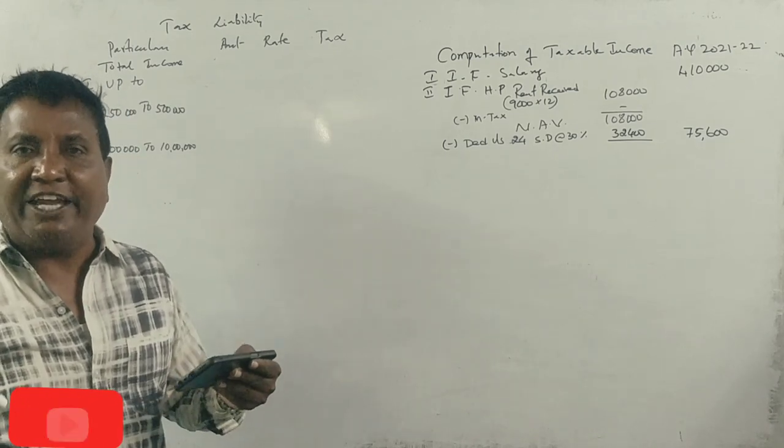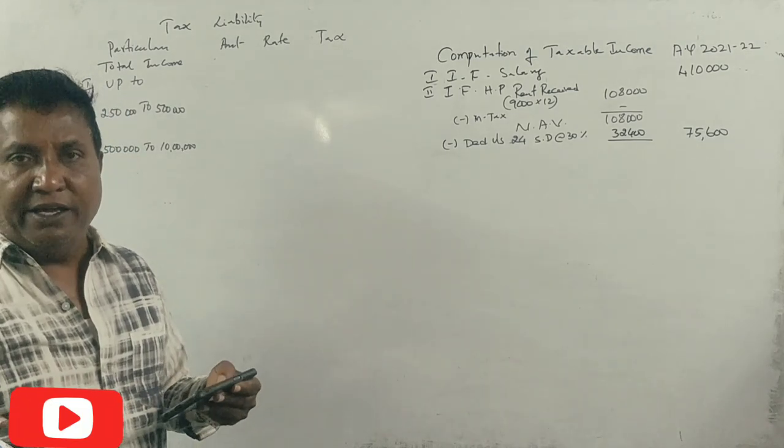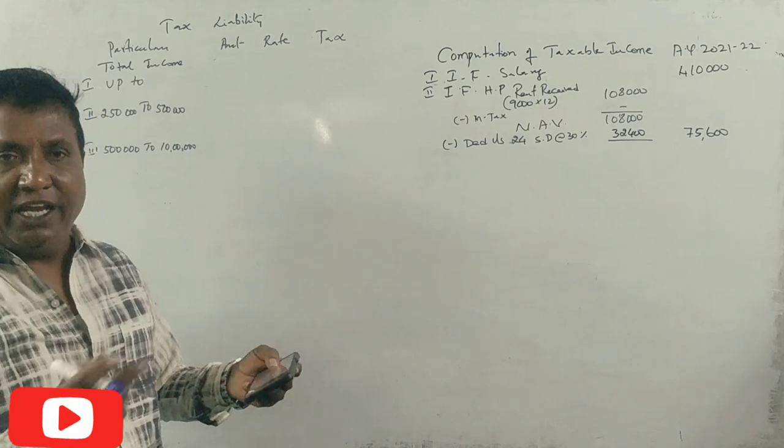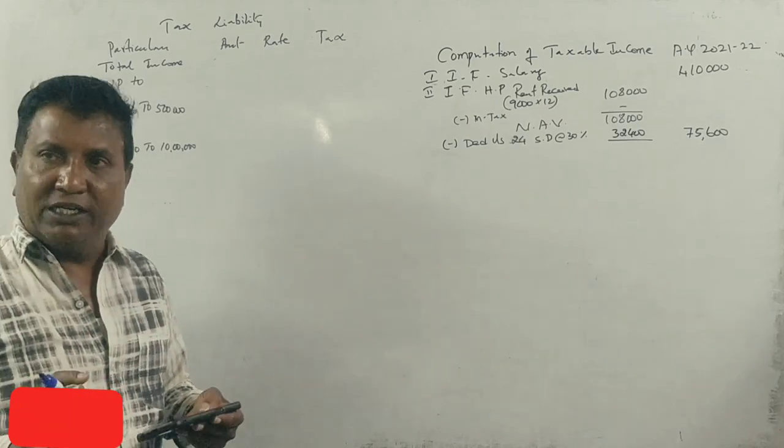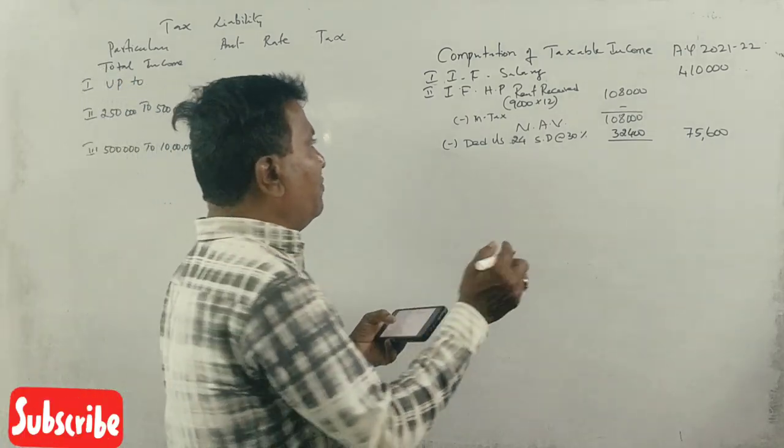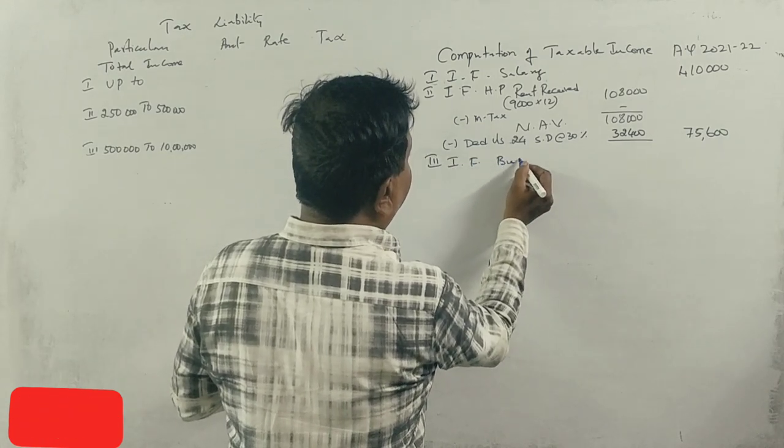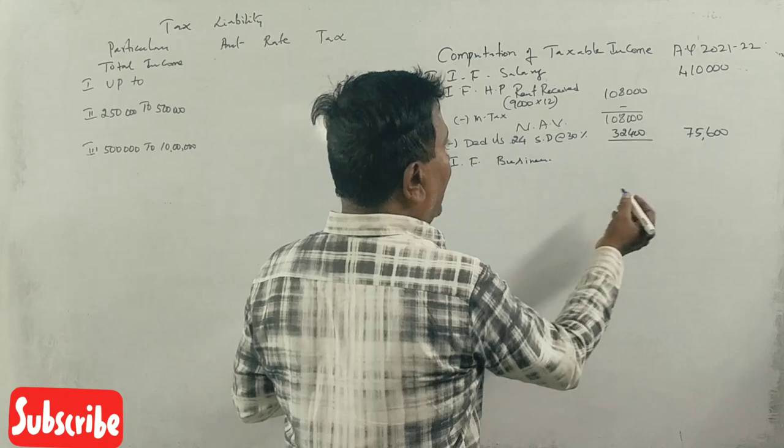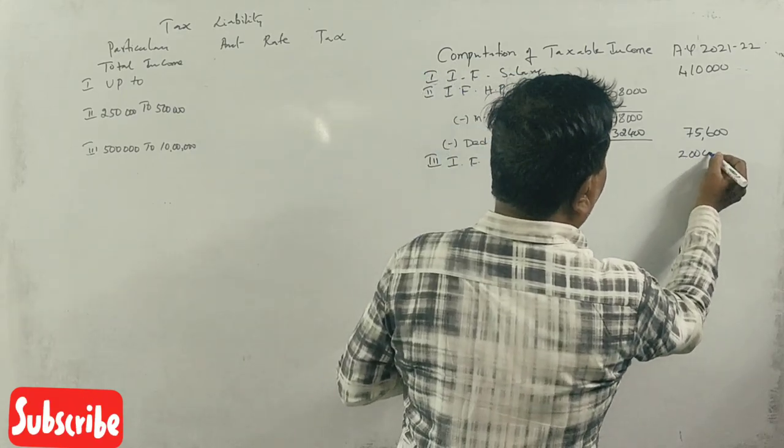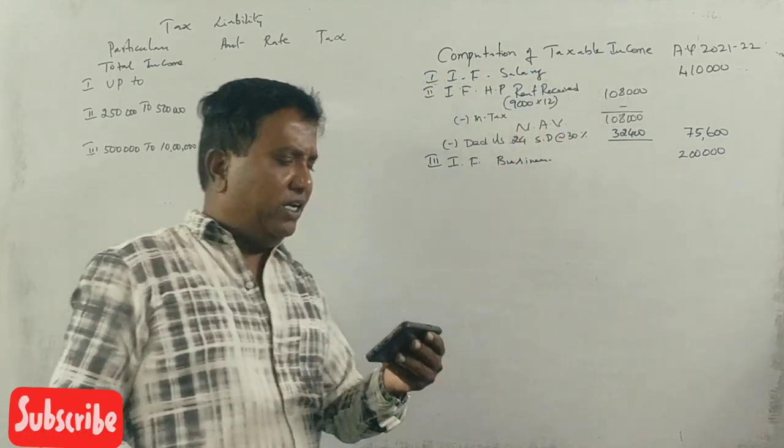Income from house property computed. Rent received, now compute. Next, income from business.